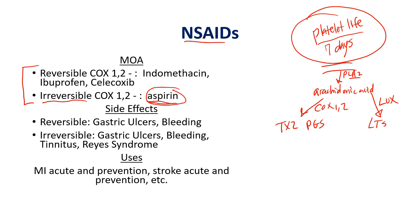Some leukotrienes are used for neutrophil chemotaxis — LTB4; I remember 'B' for 'brings in the neutrophils.' Other leukotrienes are involved with allergic and asthmatic responses. Thromboxane A2 and prostaglandins are involved in vasodilation, capillary permeability, and the inflammatory response. NSAIDs act on the cyclooxygenase 1 and 2 enzyme in this pathway.